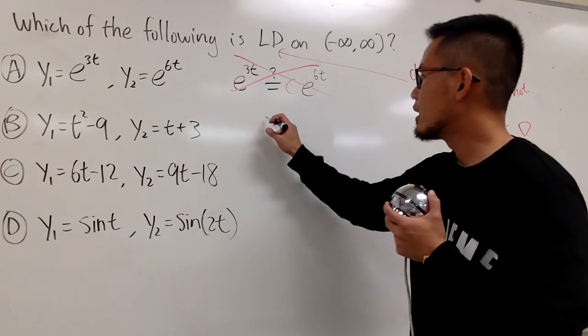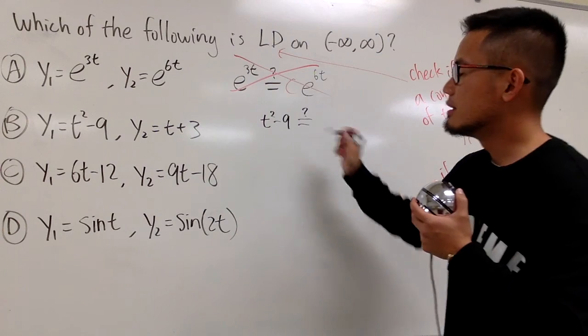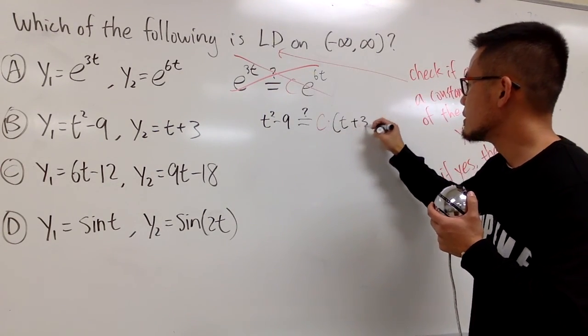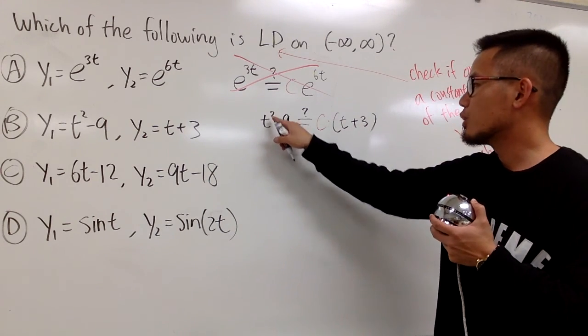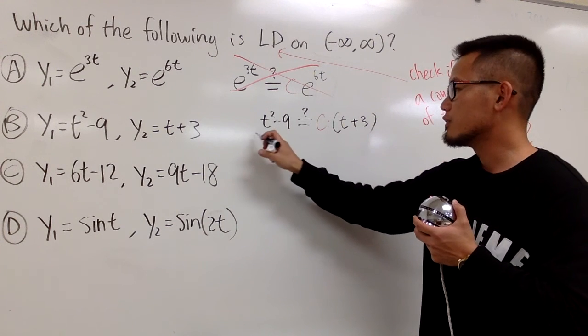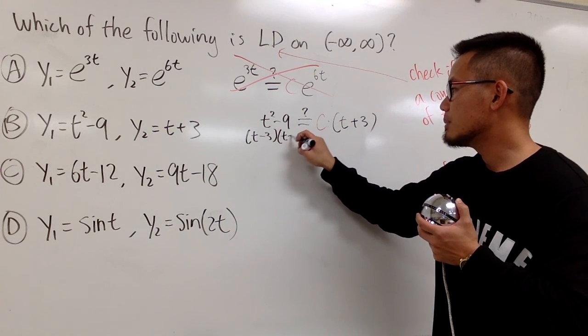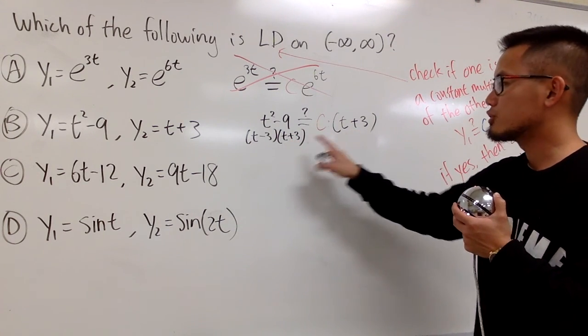So, let me put down t squared minus 9. Can I make this equal to c times the second function, which is t plus 3? Okay, maybe you see that this is t squared minus 9. You can factor it. I will factor it for you guys, which is the same as t minus 3 times t plus 3, right? And yes, I agree with you guys, I have the t plus 3 match.